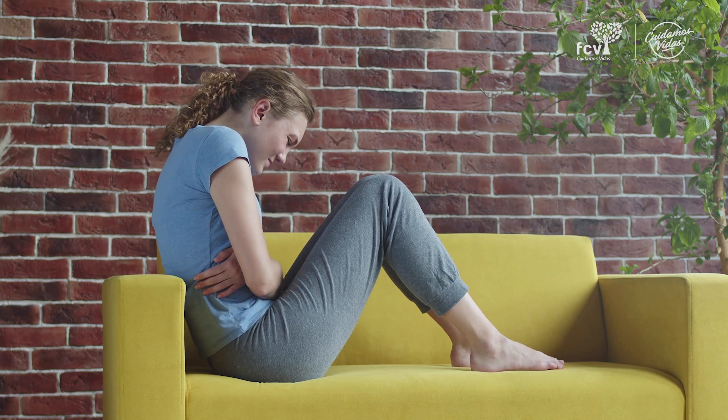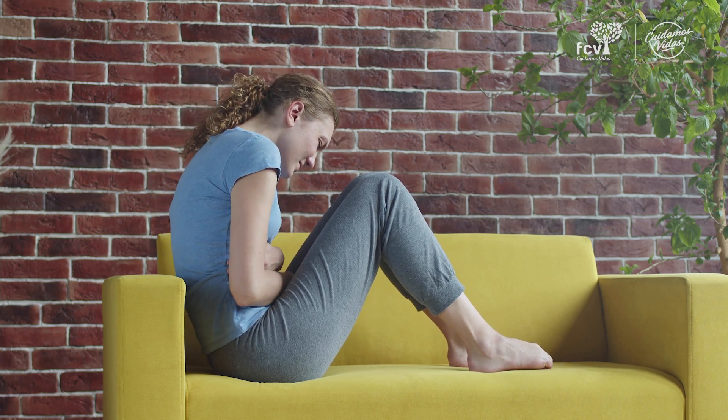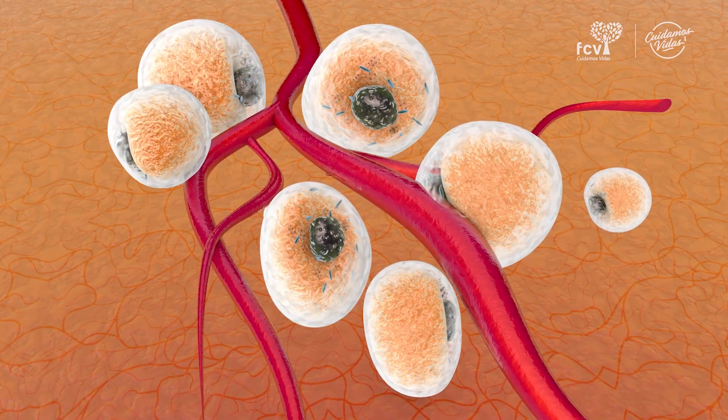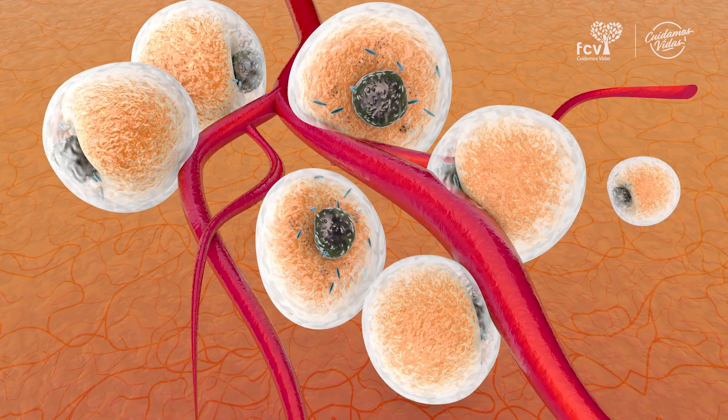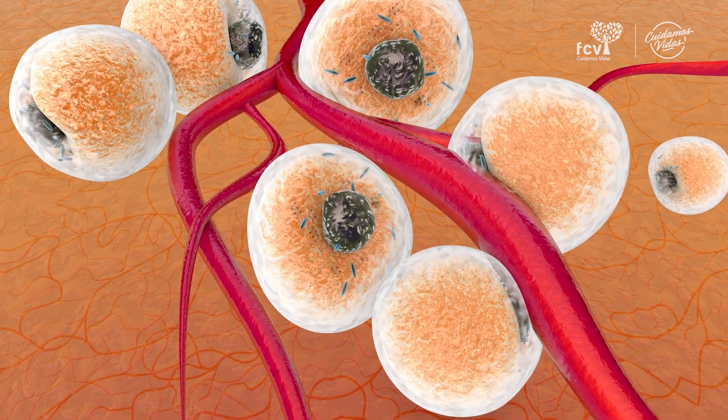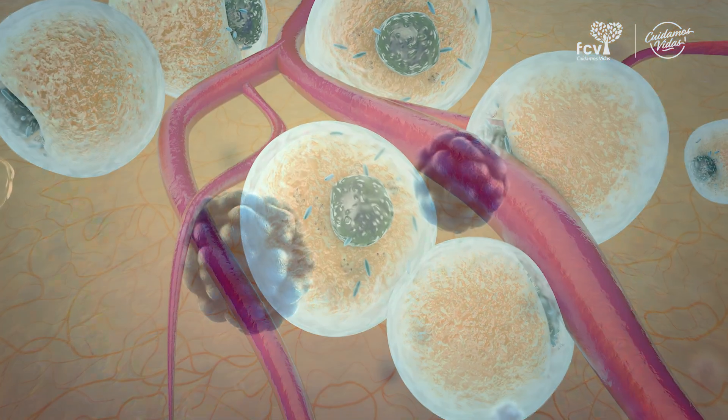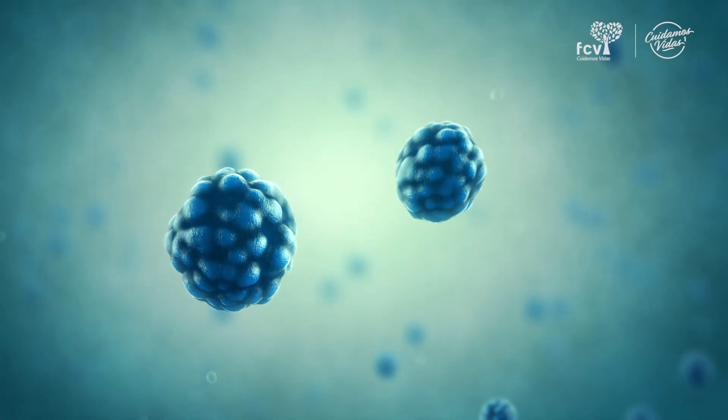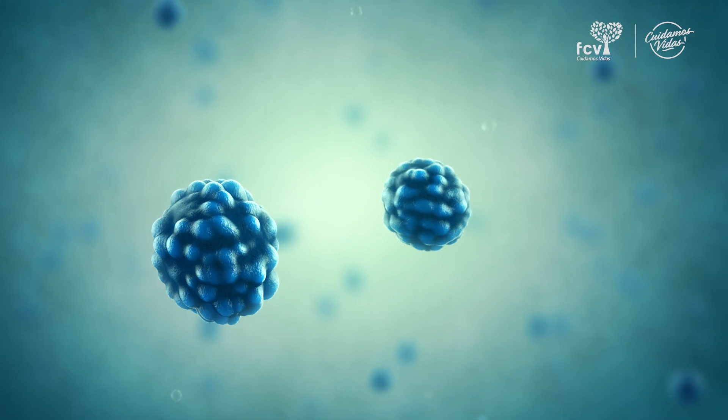Dentro de las causas de la endometriosis hay diferentes teorías. La que más se resalta es la teoría de la translocación, donde se habla de una menstruación retrógrada: por algún motivo, el sangrado no fluye a través de la vagina sino que un porcentaje se devuelve por las trompas y esas células endometriales caen a la cavidad abdominal. En la mayoría de mujeres, el 90% logra que su sistema inmunológico elimine esas células. Sin embargo, en un 10%, esas células tienen la capacidad de generar vasos sanguíneos, hacer una invasión y formar implantes endometriósicos.